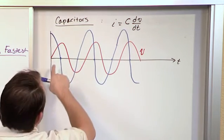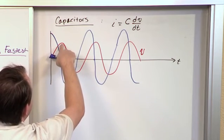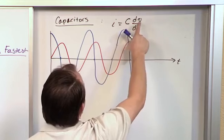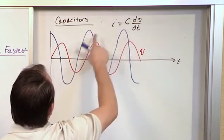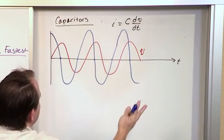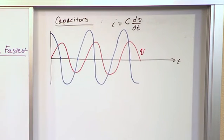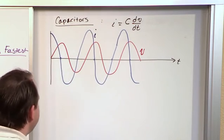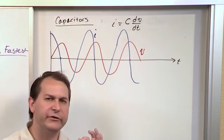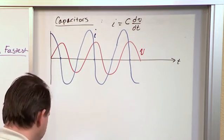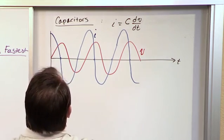Now also notice that everywhere where the voltage was a maximum here, we get a current of zero, because when the voltage is not changing very much, the current is zero. So here we have a zero, here we have a zero, here we have a zero, and so on. So it's very, very similar - it's very, very similar to the situation we had with an inductor, with one important difference. Notice that, in this case...